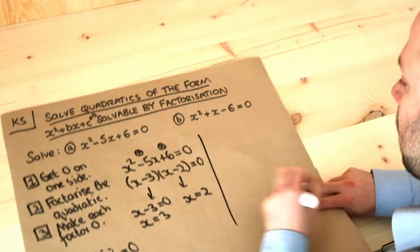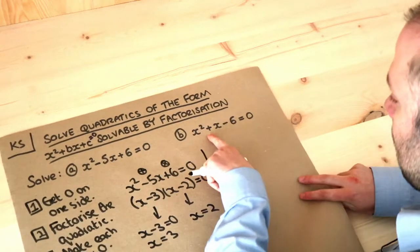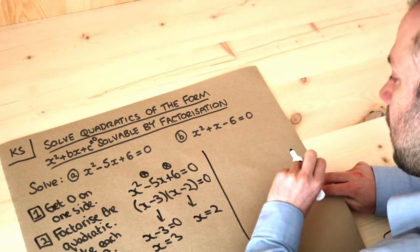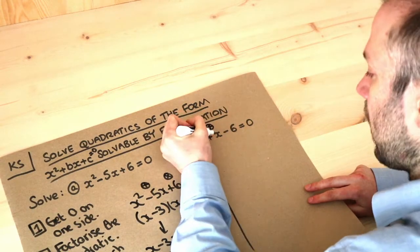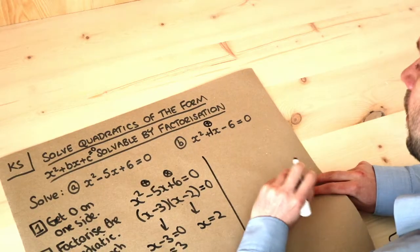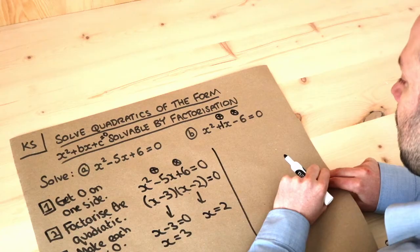What about this next one? Again get zero on one side. We've done that. Factorize the quadratic. So we need two numbers that add to give the plus one, because it's plus one x. There's a kind of ghostly one there. And they times to give that last number there, so the minus six.